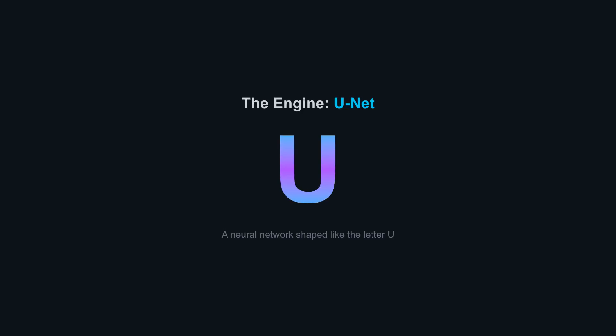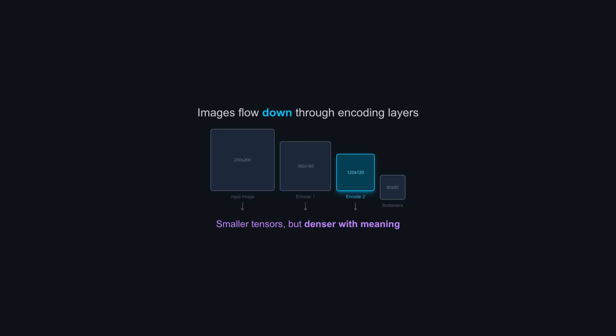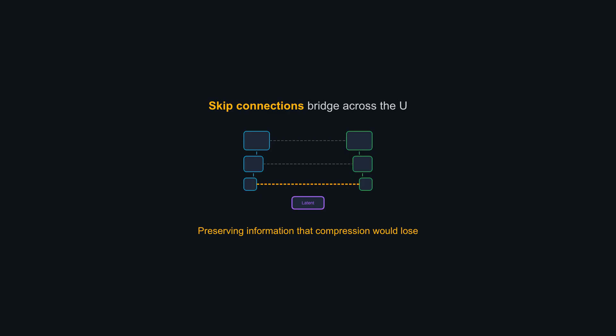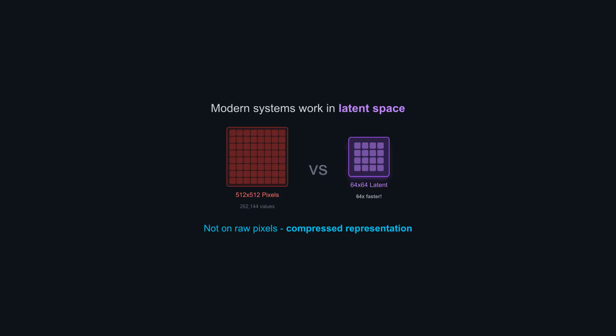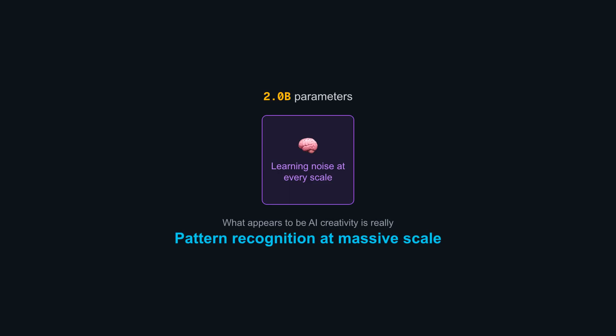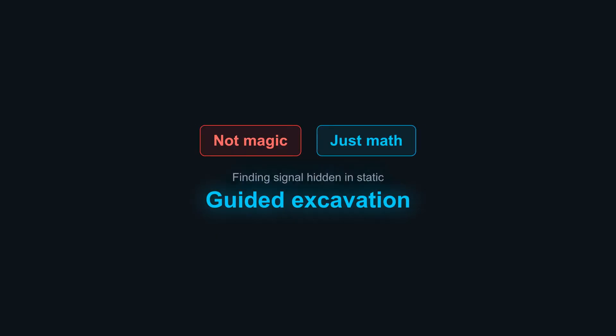The engine behind this is called a U-Net. Picture a neural network shaped like the letter U. Images flow down through encoding layers that compress them into abstract representations — smaller tensors, but denser with meaning. Then back up through decoding layers that reconstruct fine detail. Skip connections bridge across the U, preserving information that compression alone would lose. Modern systems like Stable Diffusion work in this compressed representation called latent space, not on raw pixels. Same diffusion concept, smaller canvas, dramatically faster computation. Billions of parameters learning what noise looks like at every scale. What appears to be AI creativity is really pattern recognition operating at massive scale. Not magic. Just math, finding signal hidden in static.